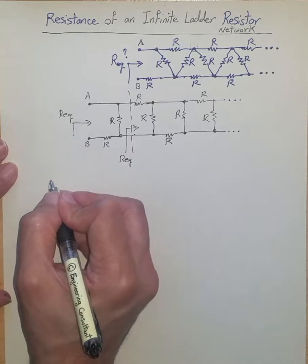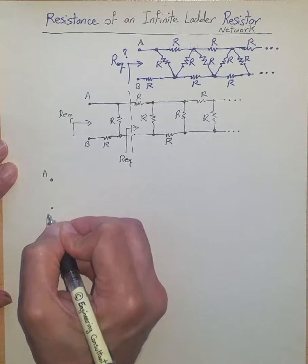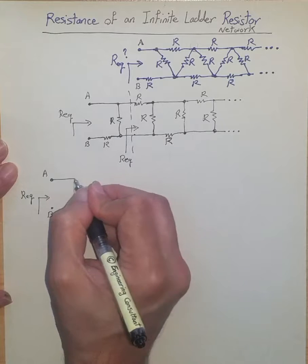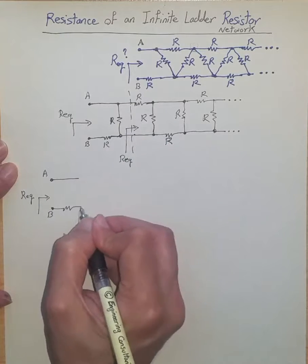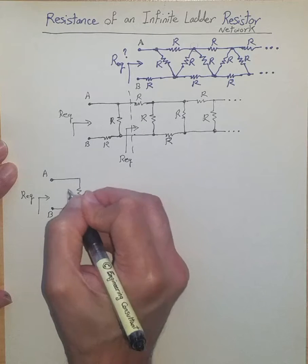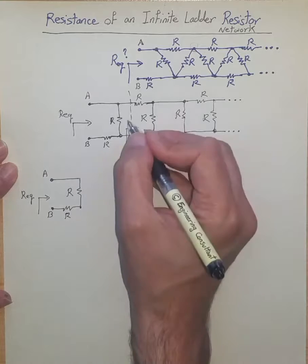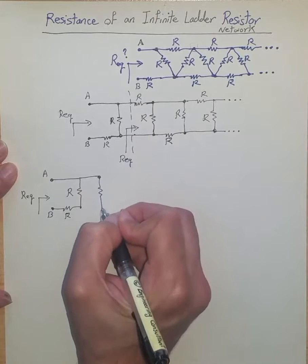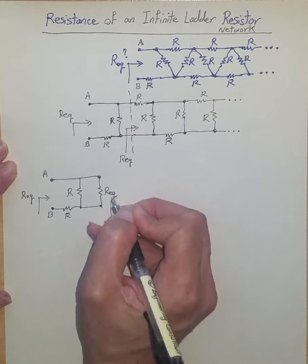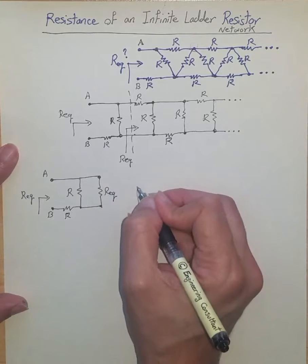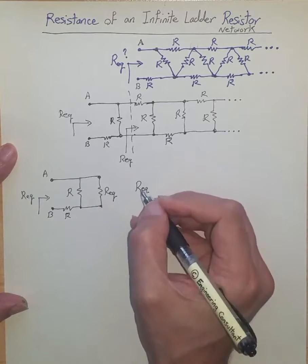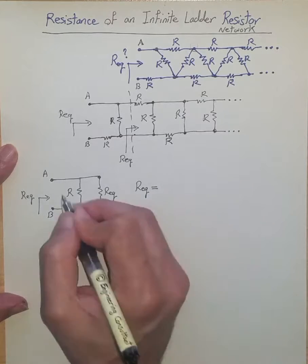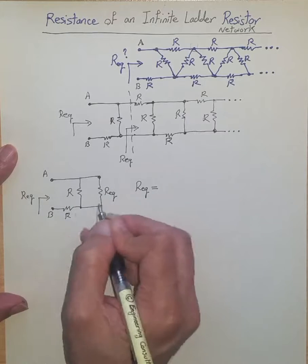With this observation, we can simplify the whole thing. Between nodes A and B, this is what I want to find — the equivalent resistor — and I'm going to keep R, and keep this R as well. These two R resistors are in place, and from this point on I have a repetition of what I want to find, so it's going to be R equivalent again. This makes the problem way more simple to deal with.